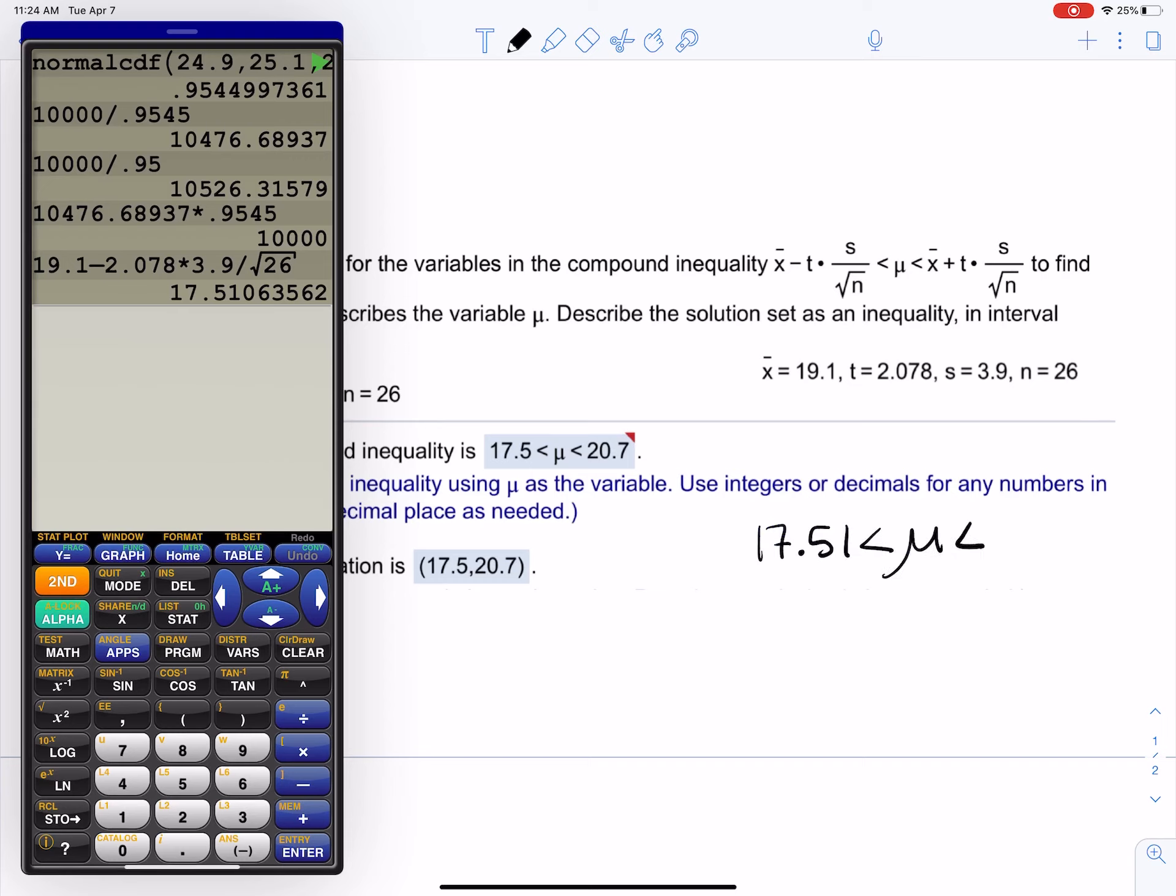Now we're going to get the other one. What I like to do in my calculator is a little trick: I go up to that, press enter, bring it down, and then just scroll over to the left and change that to addition. Makes things a lot easier.